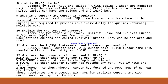What is a cursor and why is a cursor required? A cursor is required to process rows individually for queries returning multiple rows. It is a named private SQL area from where information can be accessed. This is a temporary work location created by Oracle whenever you execute a SQL statement — this temporary area is created by Oracle so cursors are required to process rows individually for queries returning multiple rows.